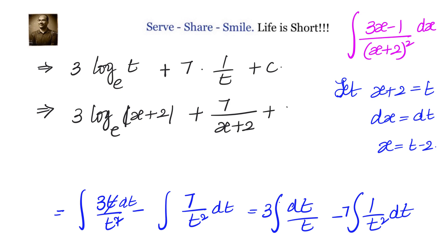So the integral of 3x minus 1 divided by x plus 2 whole square is equal to 3 log x plus 2 plus 7 by x plus 2 plus c.